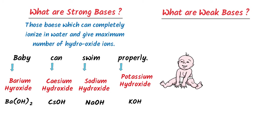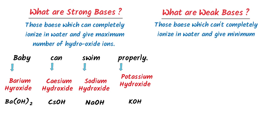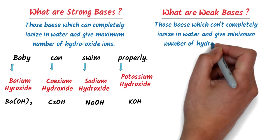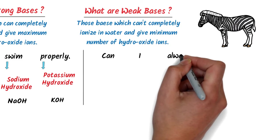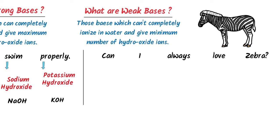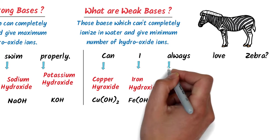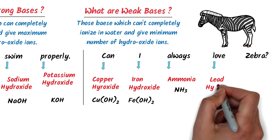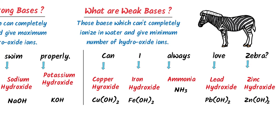Those bases which cannot completely dissociate or ionize in water and give a lower number of hydroxide ions are called weak bases. The trick to remember weak bases is 'can I always love zebra?': C stands for copper hydroxide, I stands for iron hydroxide, A stands for ammonia, L stands for lead hydroxide, and Z stands for zinc hydroxide. So this is the list of important weak bases. Note down these important points.